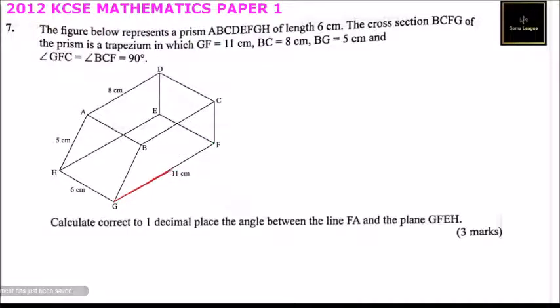That is plane GFEH, and the line FA is this one. So the angle that we are required to find is the angle between this plane and the line FA.